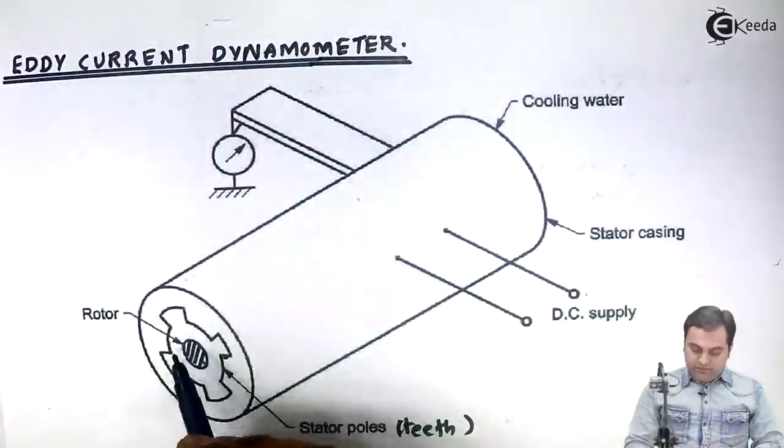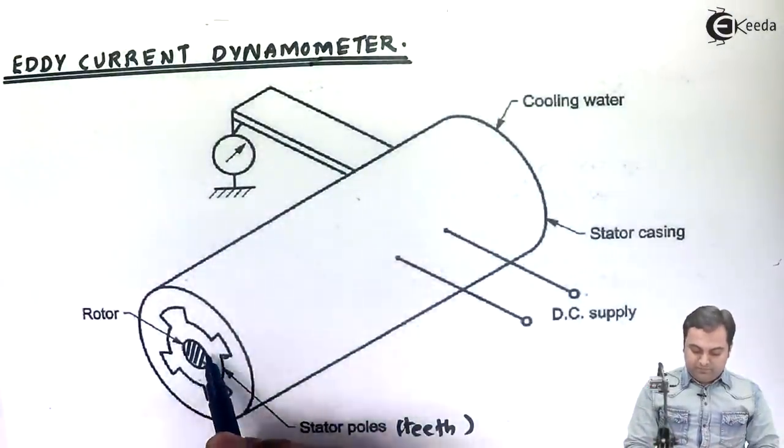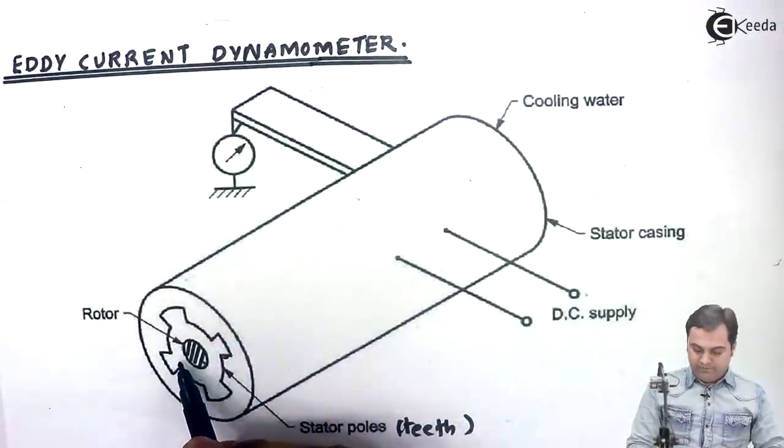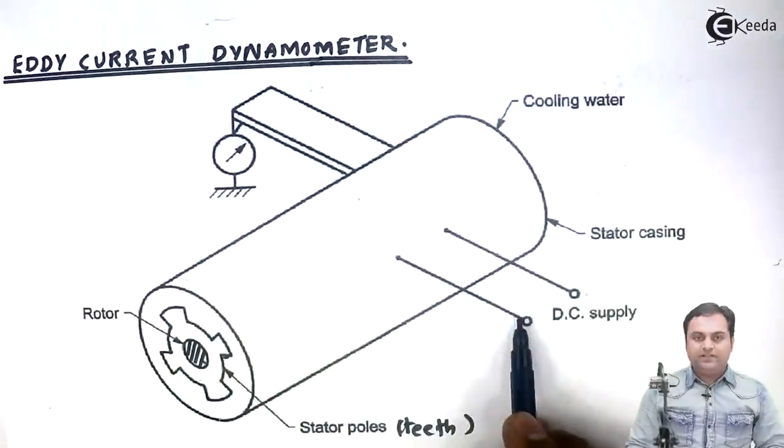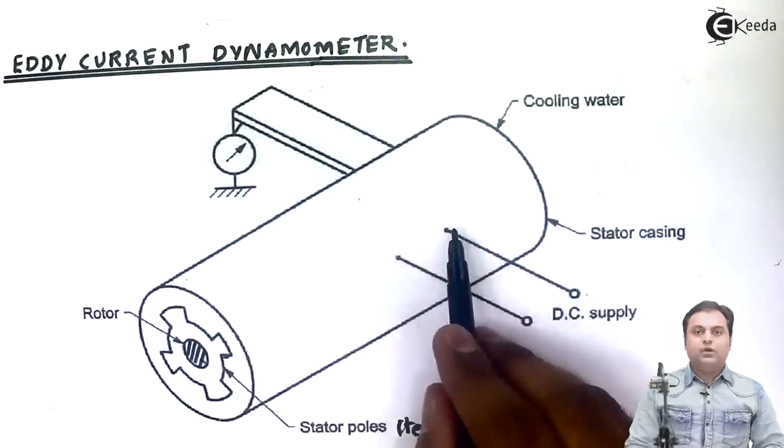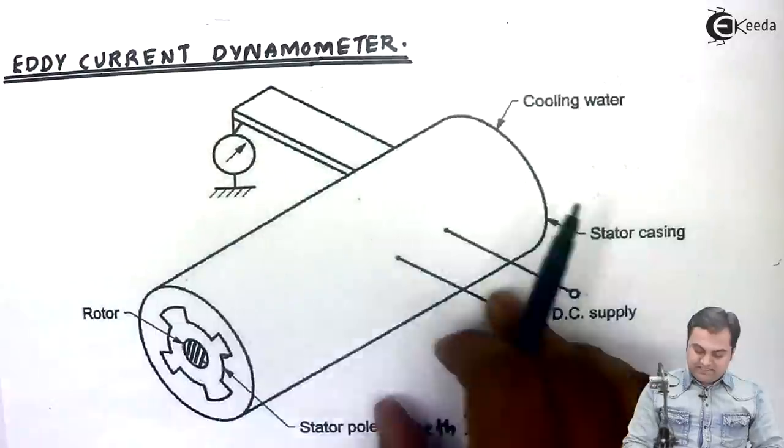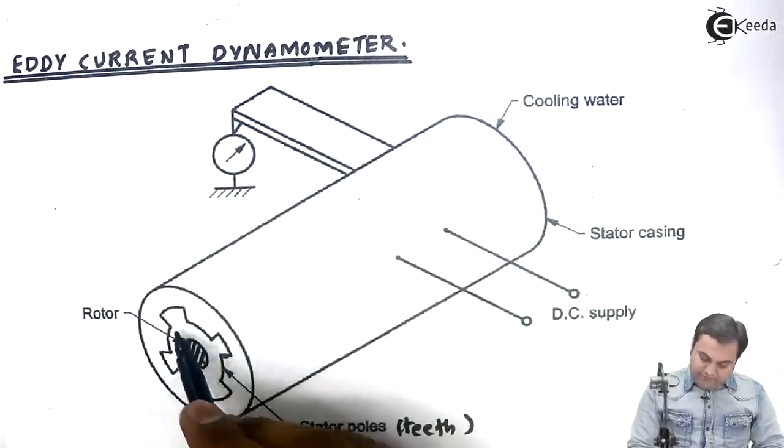Now, how it works. The shaft which is rotating is acting as the rotor. We are supplying DC current to the stator, and when DC supply is given to the stator, a magnetic field is produced around the rotor.